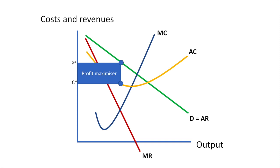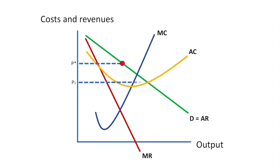Now let's remove it. Since the firm is not choosing to profit maximize, its price will be below P-star. Also, let's assume they are looking to earn above normal profit. Let's select a price in between P-star and P-1 and see what the diagram might look like for a profit satisficer.